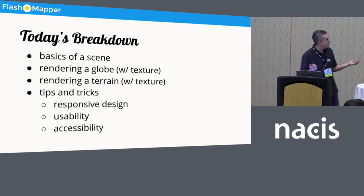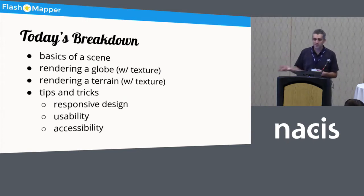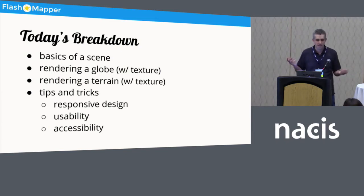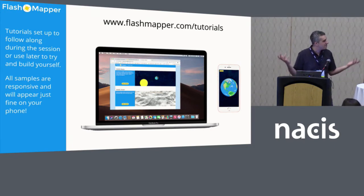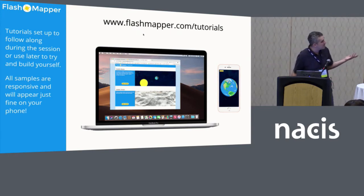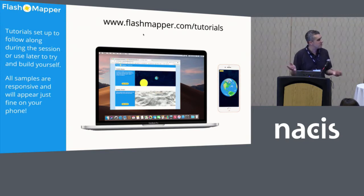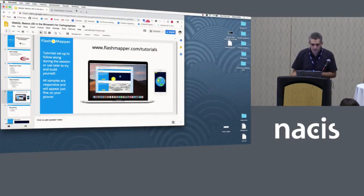I'm going to go through just the basics of a scene, rendering a globe with a texture, rendering a terrain, and some tips and tricks for responsive design, usability, and accessibility. I decided not to code live — I thought that would be a complete disaster for everybody, including myself. So I put together a little page, flashmapper.com/tutorials. I'm going to pop open some of the samples to talk through. Everything on it is responsive if you want to follow along on your phone.